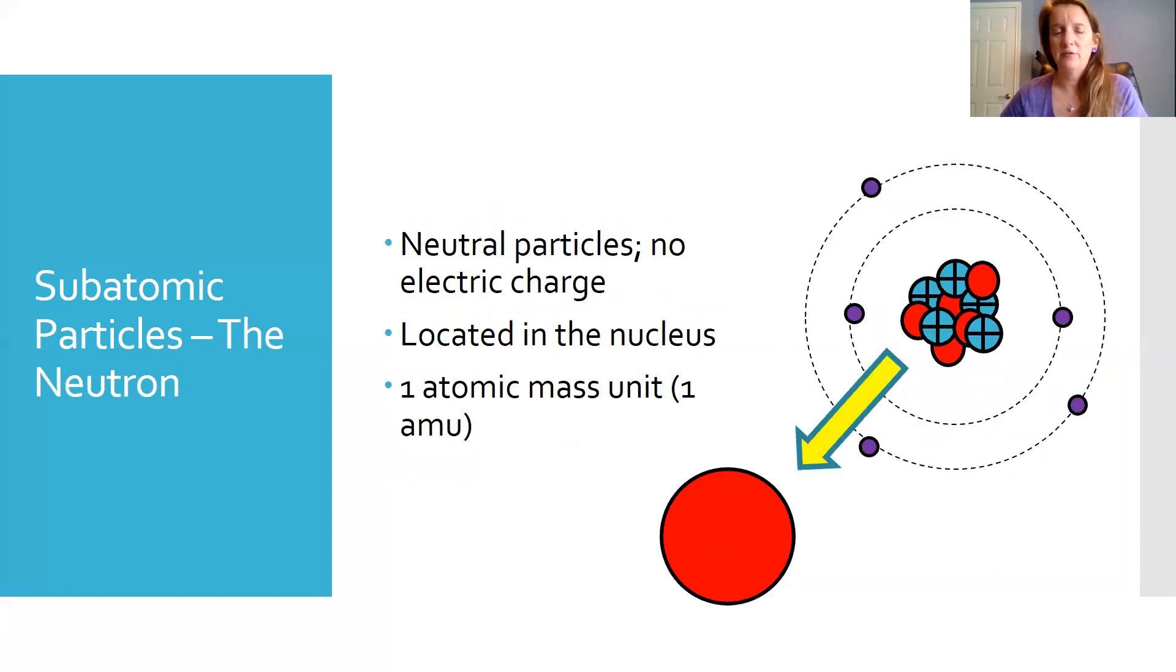The neutron discovered by James Chadwick is the other thing that's found inside of the nucleus. This one has no charge at all. It's there to help hold the nucleus together to stabilize the nucleus. The number of neutrons can change. We'll talk about that later. It is also the same mass as a proton, one atomic mass unit.